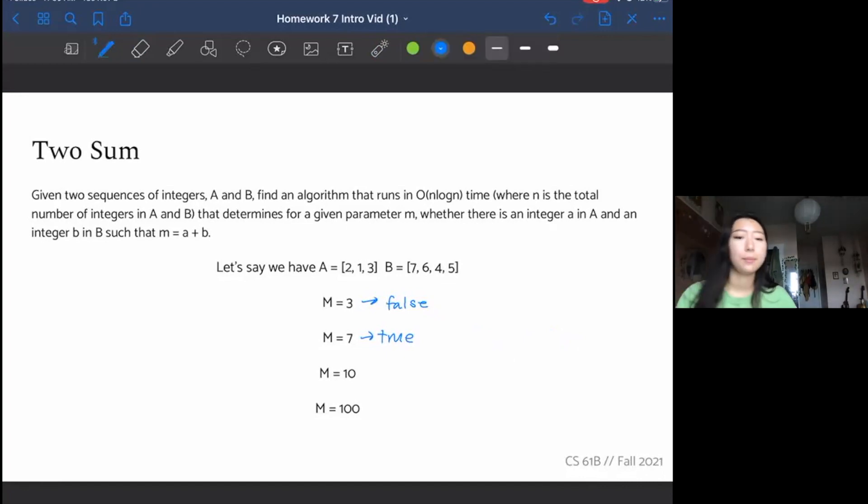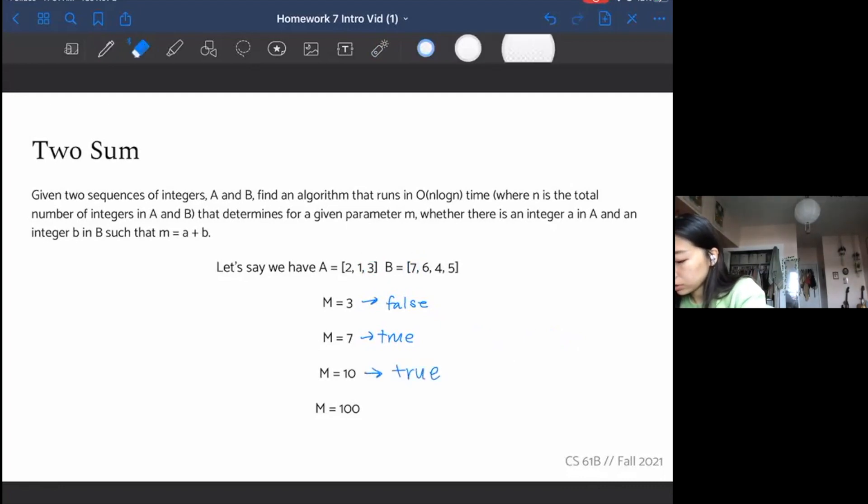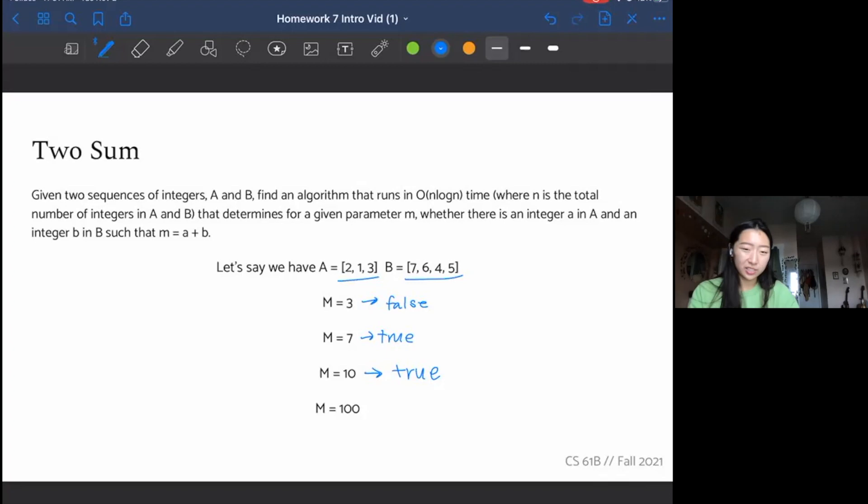Now for M equals 10, we're going to see, oh, we could do three and seven, right? And so this is true. What about M equals 100? Well, we see right away there's no way we could add up these small numbers and get something like 100, right? And so that's false.